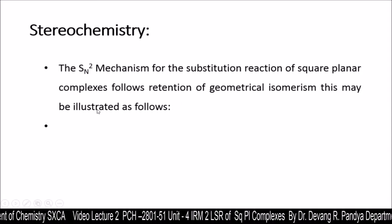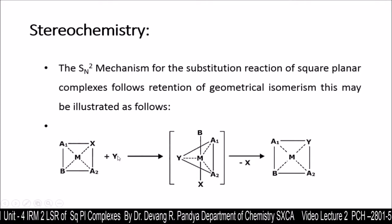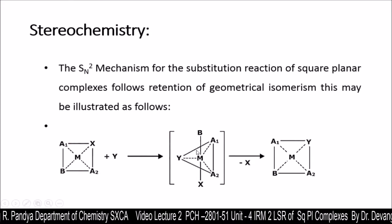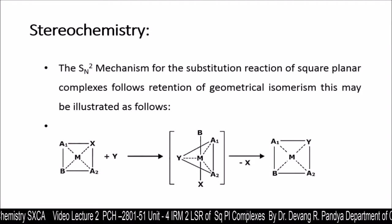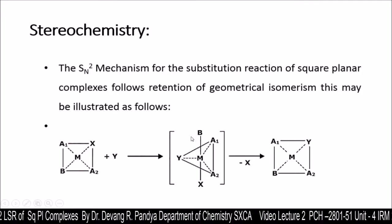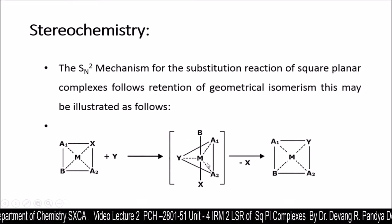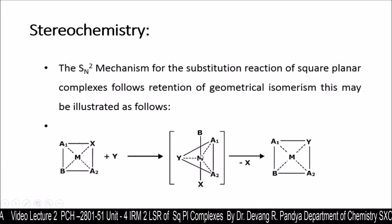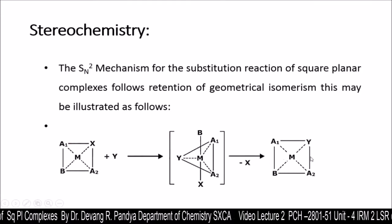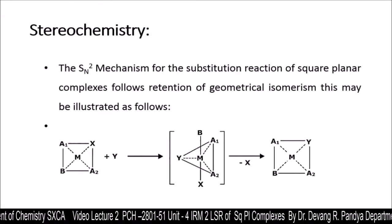The SN2 mechanism facilitates substitution in square planar geometry and retains geometrical isomerism. When nucleophile Y attacks a square planar complex, two intermediates can form: square pyramidal or trigonal bipyramidal (TBP). The TBP geometry is generally more stable. The coordination number increases from 4 to 5 in the intermediate stage, then the leaving group X departs, and the square planar geometry is retained. Hence, retained geometrical isomerism is followed in ligand substitution reaction of square planar geometry with SN2 mechanism.